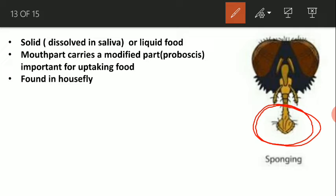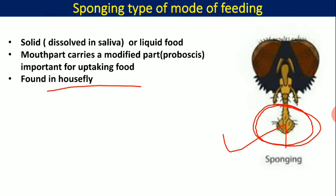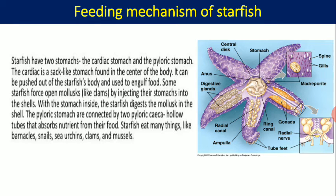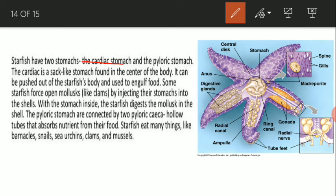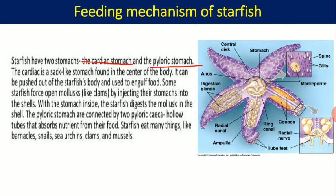The sponging type is where the proboscis becomes broader at its tip and collects dissolved or liquid food material. It is found in the housefly. The starfish has two stomachs: a cardiac stomach and a pyloric stomach. The starfish pushes out its cardiac stomach from its body, engulfs the food material, and then digests and absorbs it. In this way, starfish consume their food.